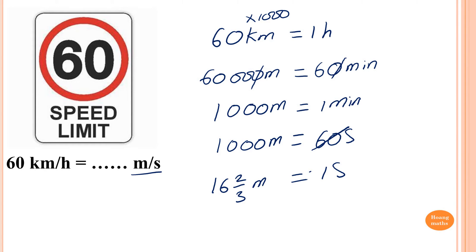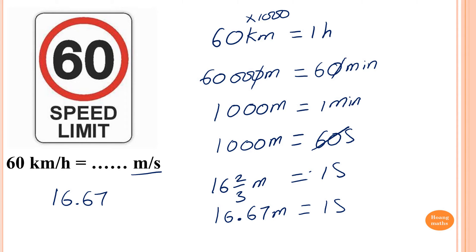If I want to write as a decimal, it's equal to 16.67, to 2 decimal places, meters per second. This means 1 second is 16.67 meters, so written in this form: 16.67 meters per second. That's how you approach the problem.